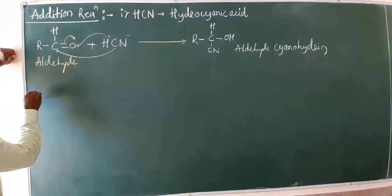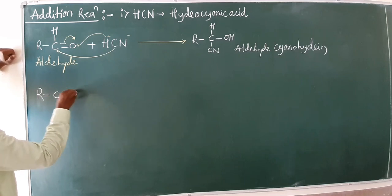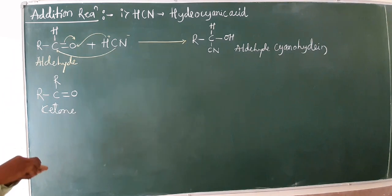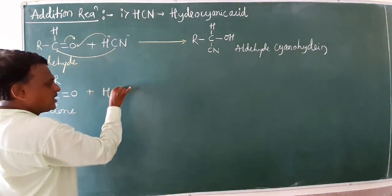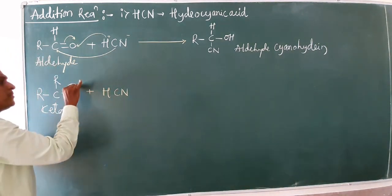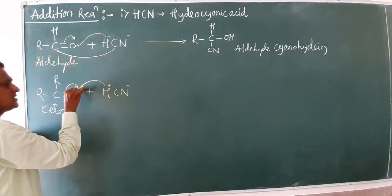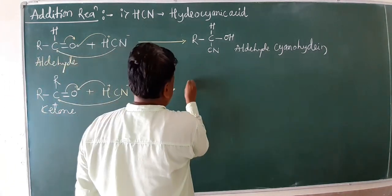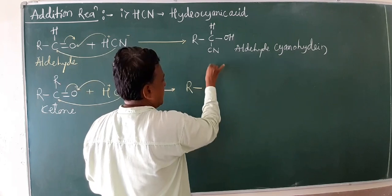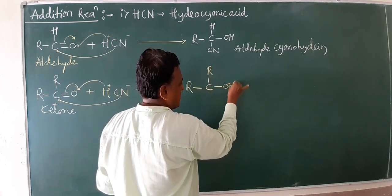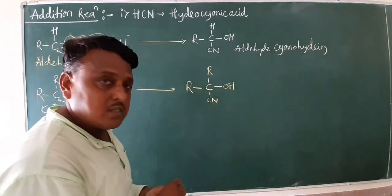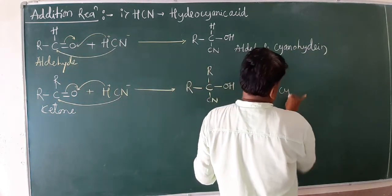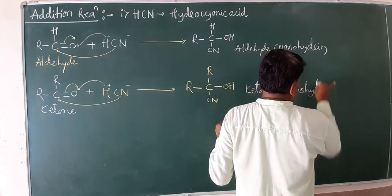Similarly for ketones — this is your ketone, R-C(=O)-R — if you use a ketone and react it with hydrogen cyanide, the pi bond is cleaved with H⁺ and CN⁻. The product is R-C(OH)(CN)-R, and the name of this compound is ketone cyanohydrin.